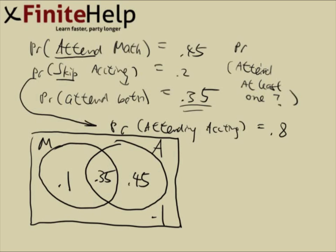To attend at least one class means he either attended math, or he attended accounting, or he attended both. So the answer is just going to be 0.9.